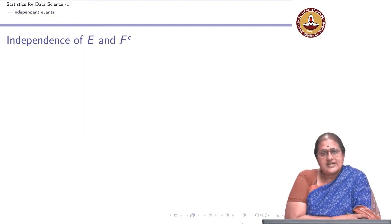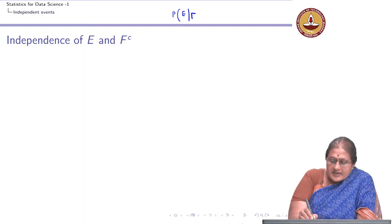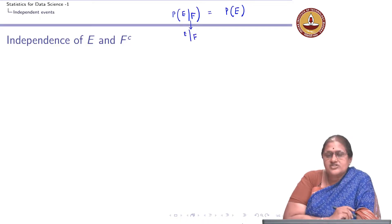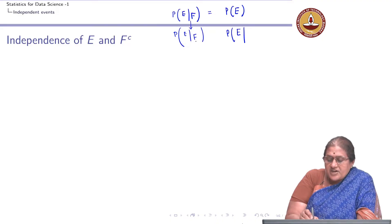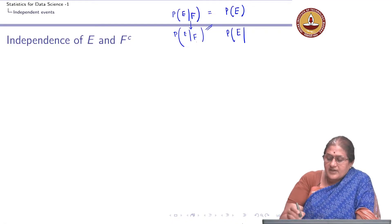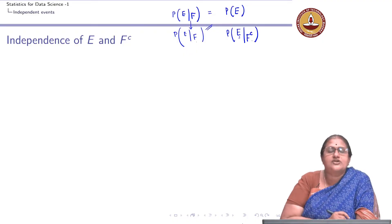The question we want to ask is: independence means that the conditional probability of event E happening, conditioned on the occurrence of F, is equal to the unconditional probability of E. So the natural question to ask is — if E conditioned on the occurrence of F does not affect the unconditional probability of E, then what can we say about the probability of E happening given the non-occurrence of F?